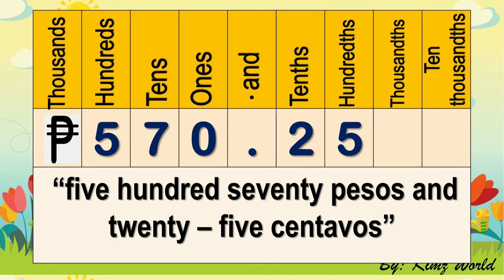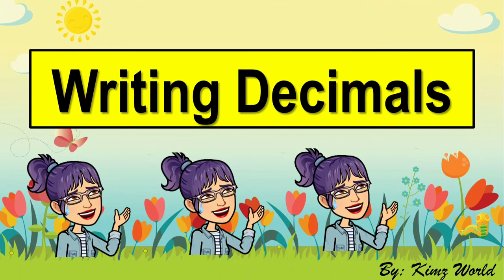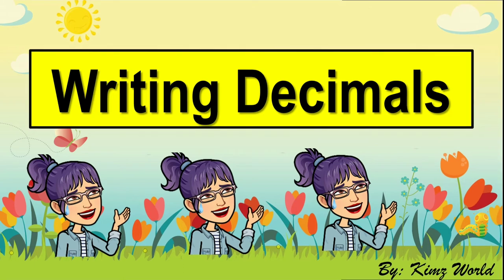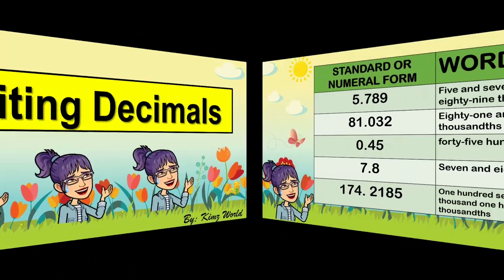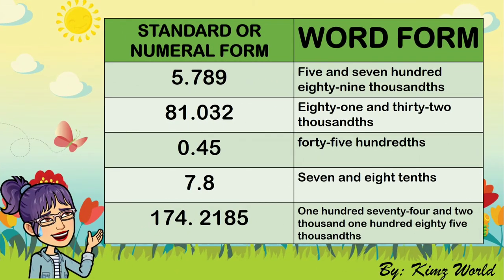Now let's proceed to writing decimals. We have many ways to write decimals: fraction form, standard form, word form, or even expanded form. But here, we will only learn how to write decimals in standard form and in word form. We write decimals just as we read decimal numbers. In standard form, we use the symbols for the numbers, and in word form, we simply write it in words.